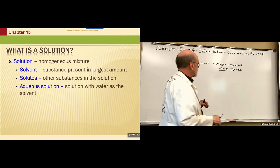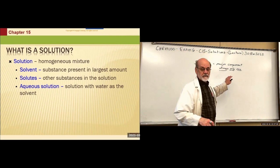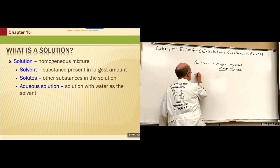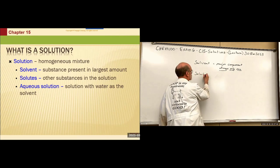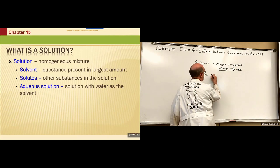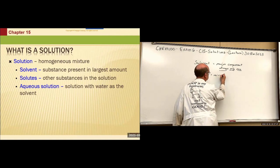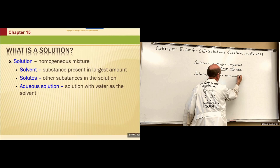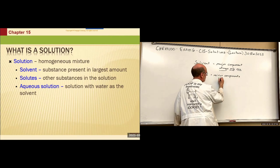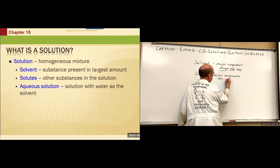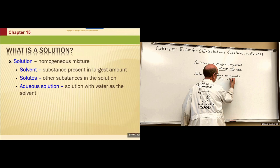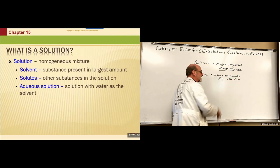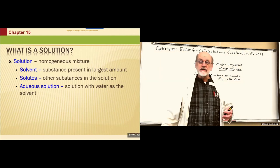You can always have only one solvent, but you can have many solutes. The solutes are the minor components, and the sky is the limit — you can have as many minor components as you want.